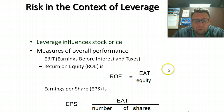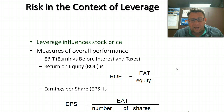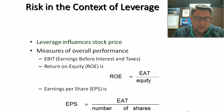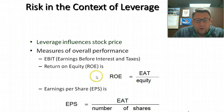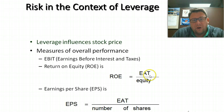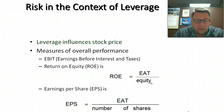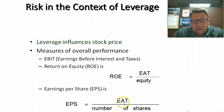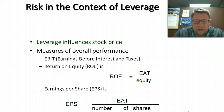A couple of measures of performance — we're going to refer back to ROE and EPS throughout these podcasts for this unit. ROE, return on equity, is EAT — earnings after tax — divided by equity, in this case common equity. Earnings per share is EAT — earnings after tax — divided by the number of shares outstanding.